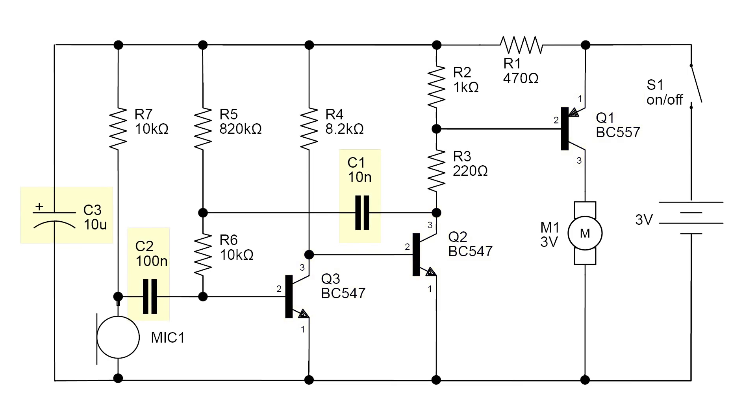Next there are three capacitors marked C1 through C3. Each shows the capacitance: 10 nanofarads, 100 nanofarads, and 10 microfarads. C1 and C2 are non-polarized capacitors, while C3 should be a polarized capacitor.